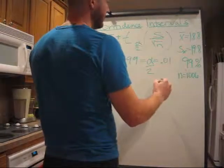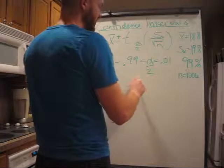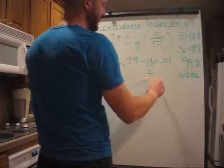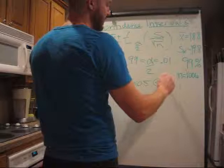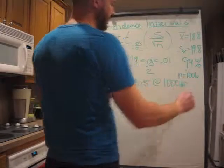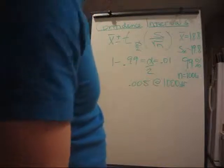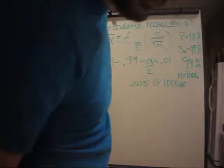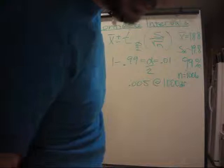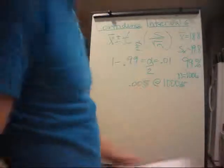Now we have to divide that by 2 because it's an interval. So we need 0.005 at 1,000 degrees of freedom in your t-table, which gives you 2.581 is your t-score.